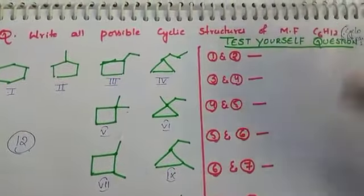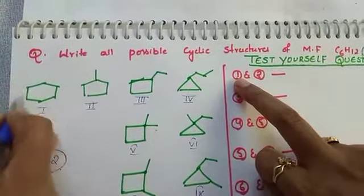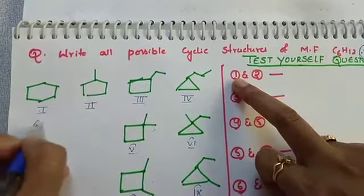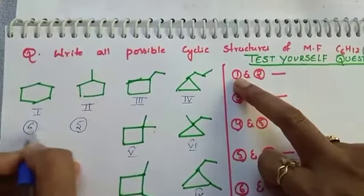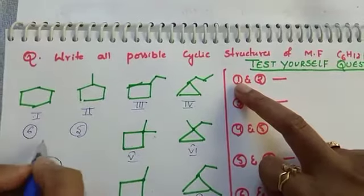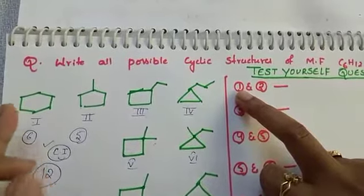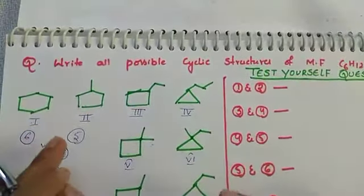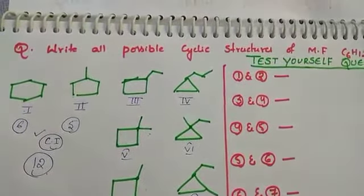One final example: here there are 6 carbons in the main chain. The second structure has a main chain of 1, 2, 3, 4, 5 — only 5 carbons. The main chain is different, so this is chain isomerism. To summarize: if the parent chain and side chain are the same but the position is different, those are position isomers. Thanks for watching.